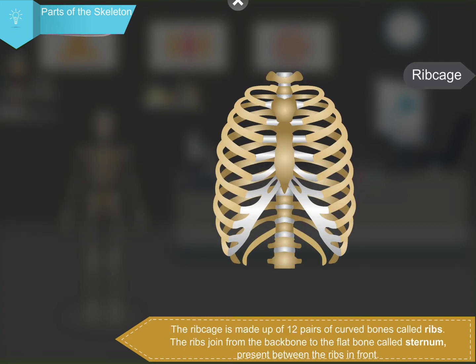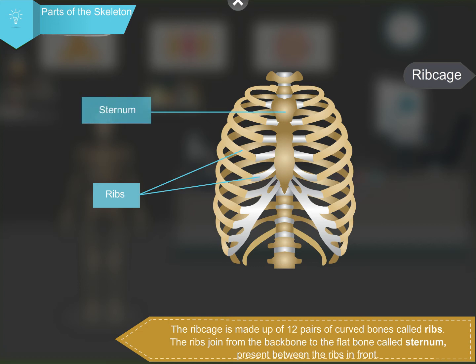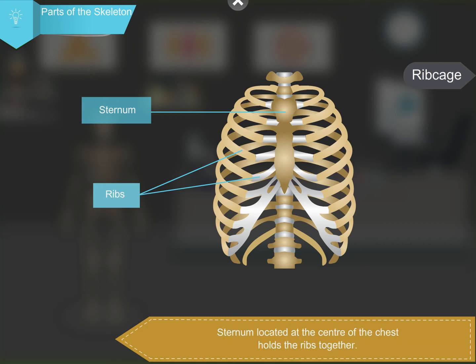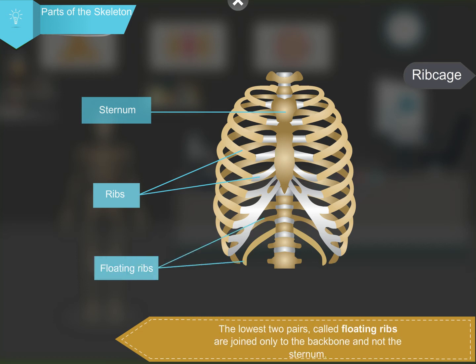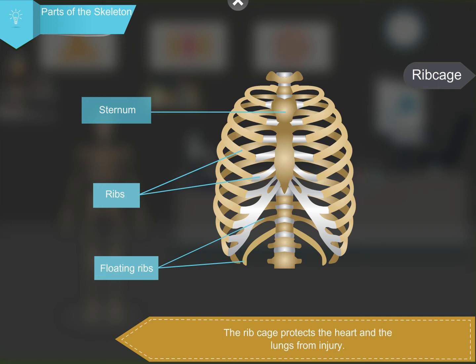The ribcage is made up of 12 pairs of curved bones called ribs. The ribs join from the backbone to the flat bone called sternum present between the ribs in front. Sternum, located at the center of the chest, holds the ribs together. The two lowest pairs, called floating ribs, are joined only to the backbone and not the sternum.